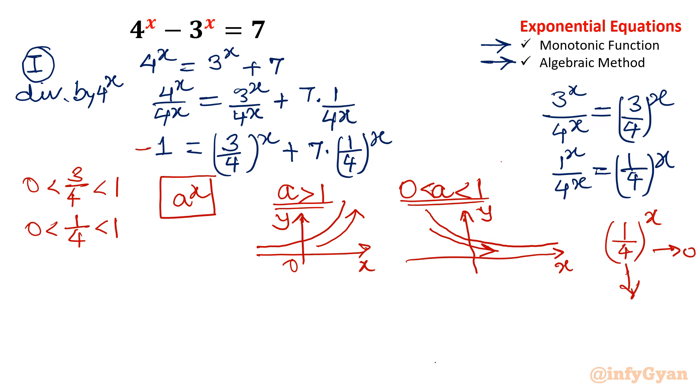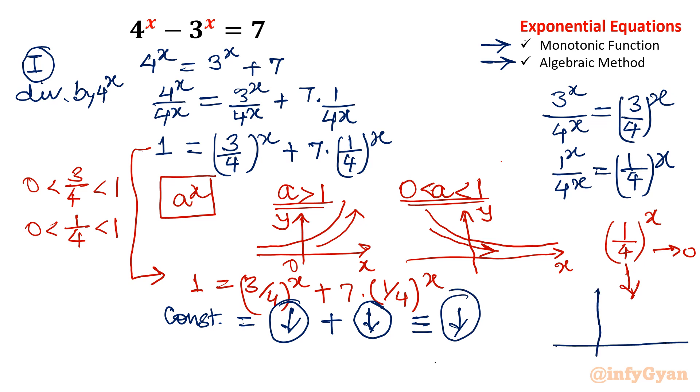Now conclusion from this. Let us write this equation again. 1 equal to 3 over 4 whole power x plus 7 times 1 over 4 whole power x. See left hand side is constant function. Right hand side is monotonic decreasing plus 7 times monotonic decreasing. So overall the function which is right hand side is monotonic decreasing. Now you can see one function is there which is monotonic decreasing and another function is there which is constant. So what is conclusion? It will give you only one point intersection. So it is confirmed that only one solution is there.